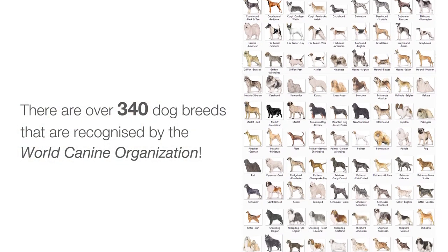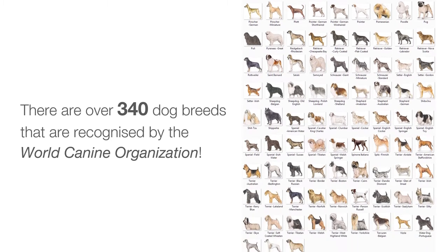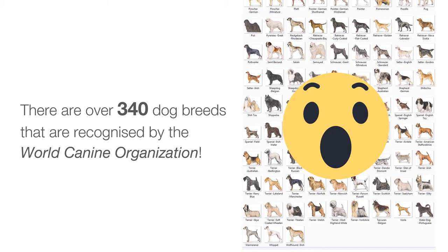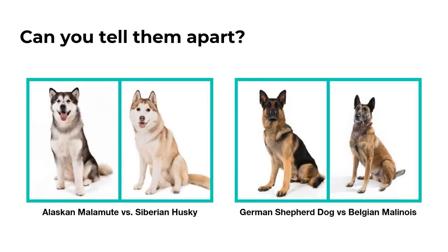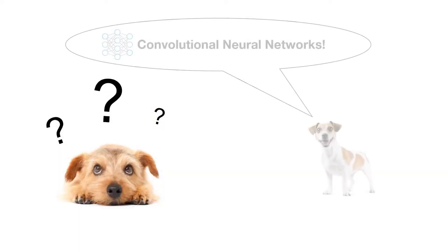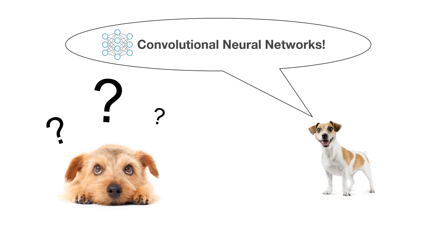There are over 340 dog breeds that are recognized by the World Canine Organization. Because of this large number, it's difficult for us humans to accurately categorize dogs into their breeds. Some breeds even look too similar for most people to tell apart. Is there anything that we can do to solve this problem? Yes, we can use a convolutional neural network.